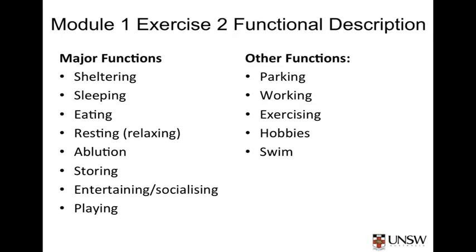We know from thousands of years of experience what sort of physical solutions are available to meet our functional needs. For example, we know that sleeping implies some form of bed, most likely in a bedroom, even if shared. Eating would normally involve some form of table and chairs in a kitchen or dining room or similar functionality. That leads in nicely to the physical descriptions of our dwelling.